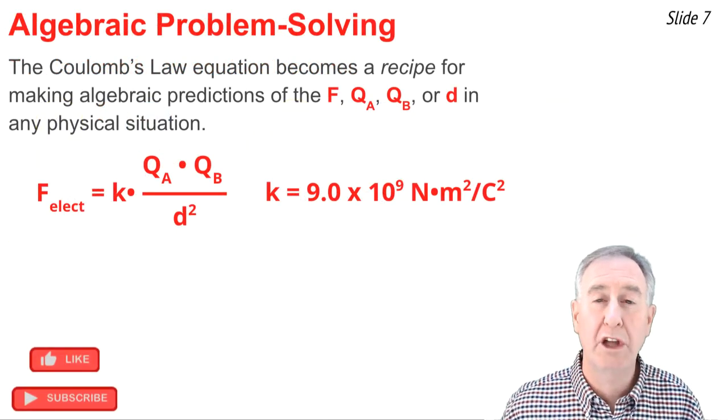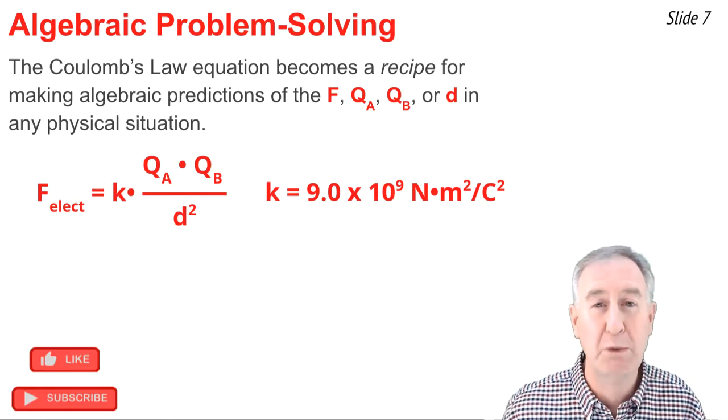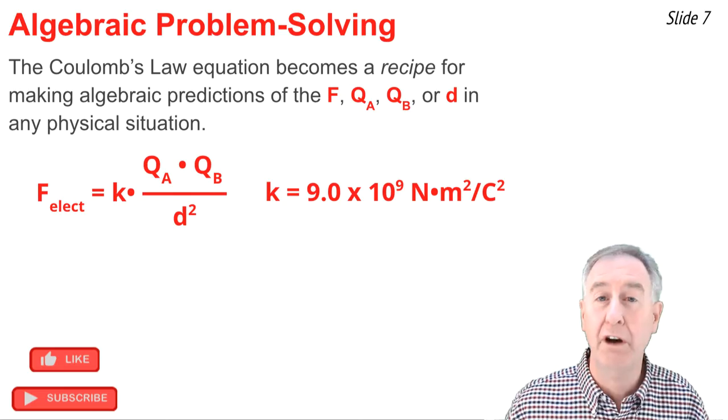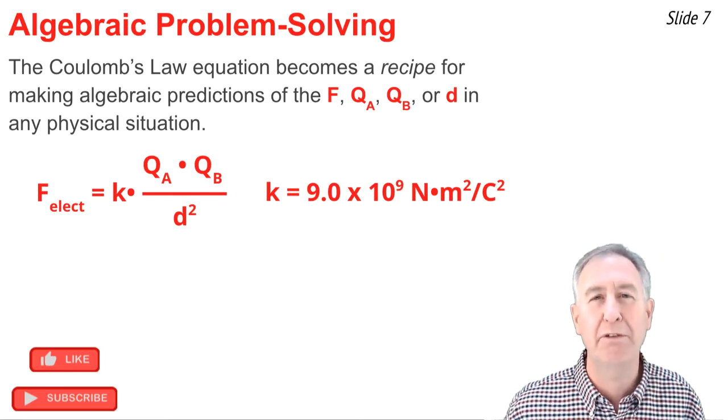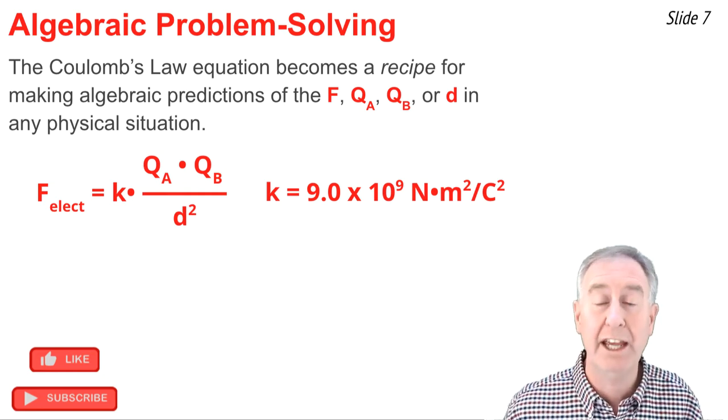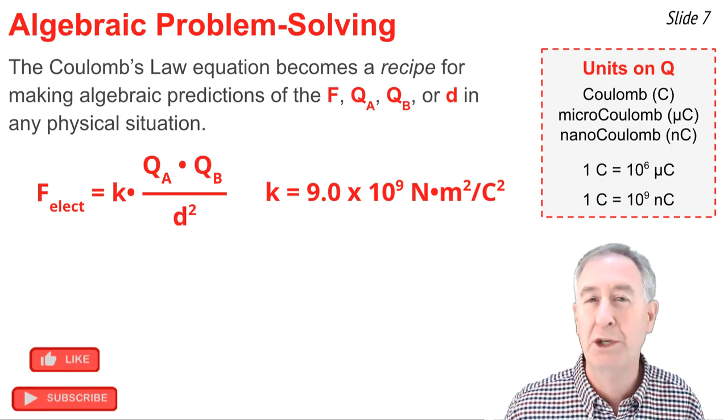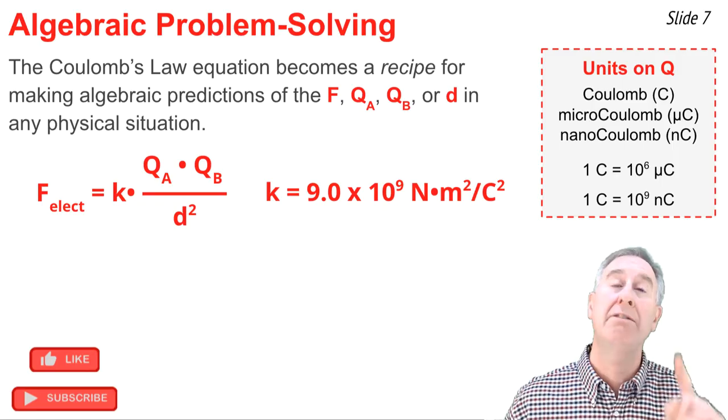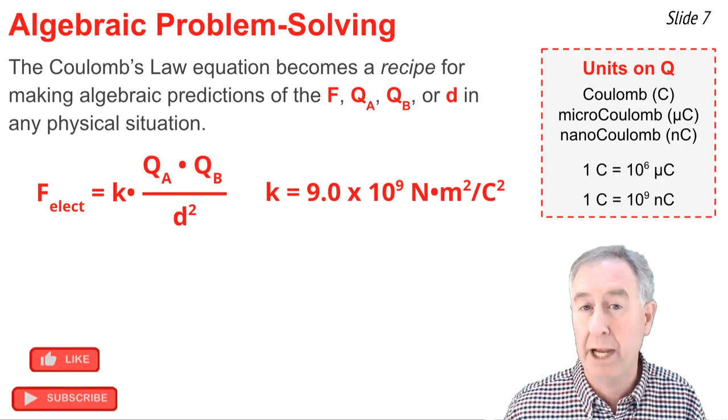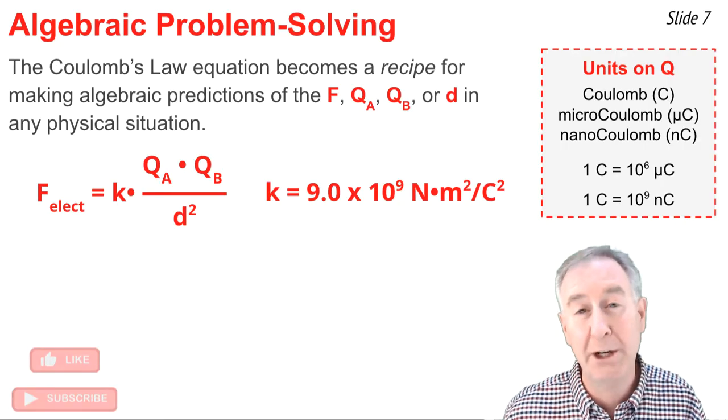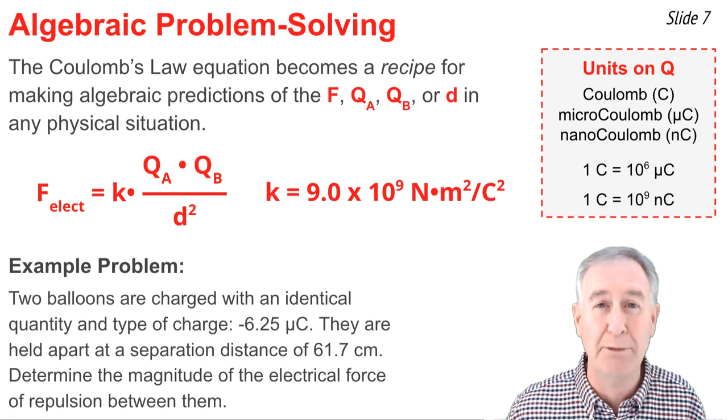The second way that Coulomb's law is often used is as an algebraic recipe for solving for an unknown in a physics word problem. Here's the equation. You'll note that there are four variables in it. If you know the value of any three, you can solve for the fourth variable. One caution you'll have to take as you solve such problems is that the value of Q is seldom given in units of Coulombs. So you'll have to use the above conversion information in order to convert from other units to Coulombs. For instance, from micro Coulombs to Coulombs or nano Coulombs to Coulombs.